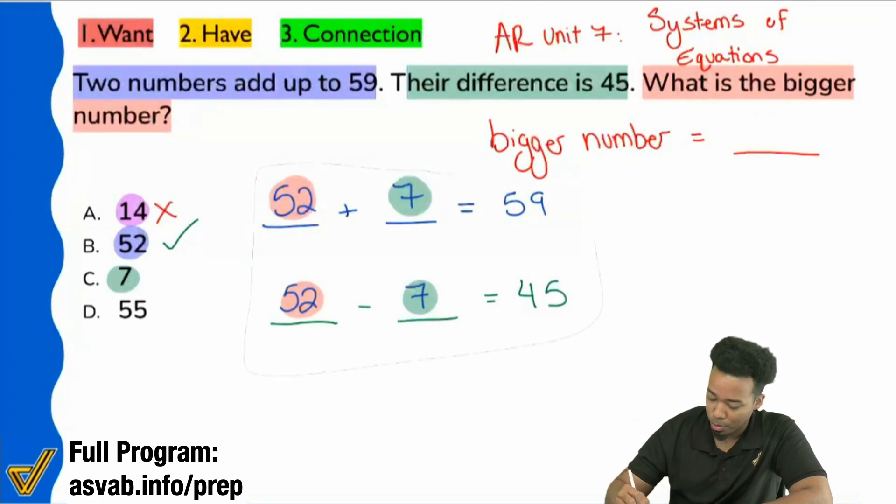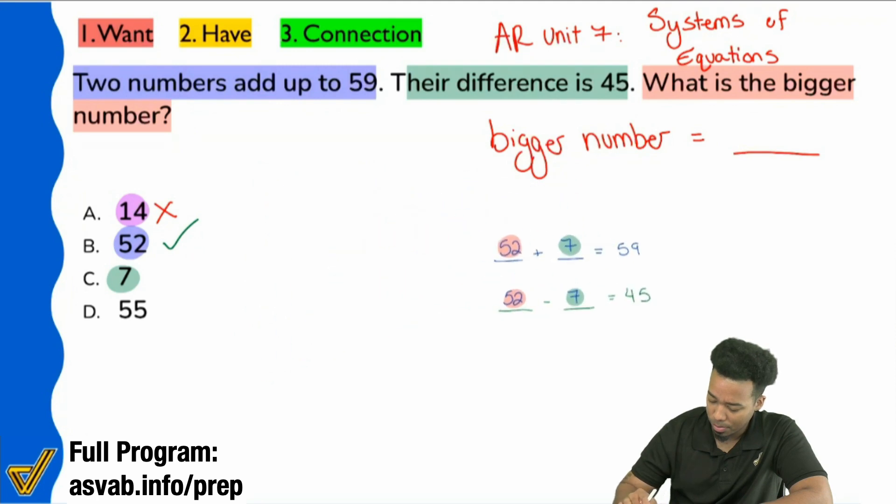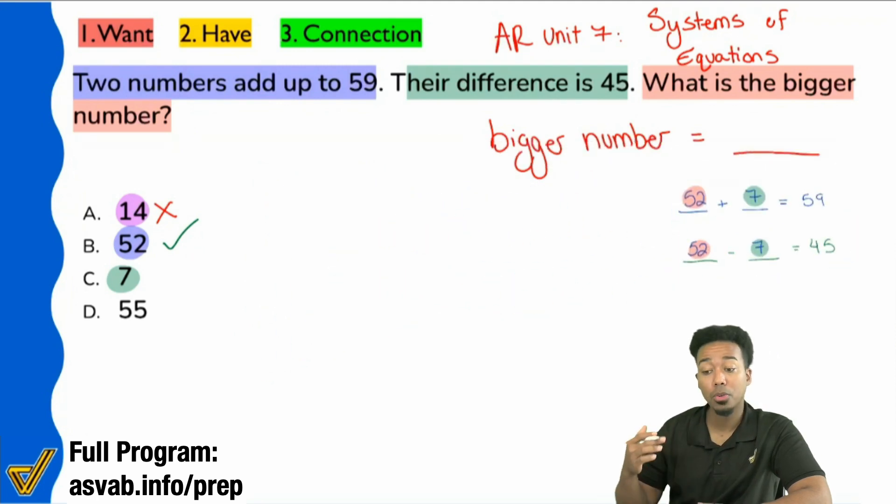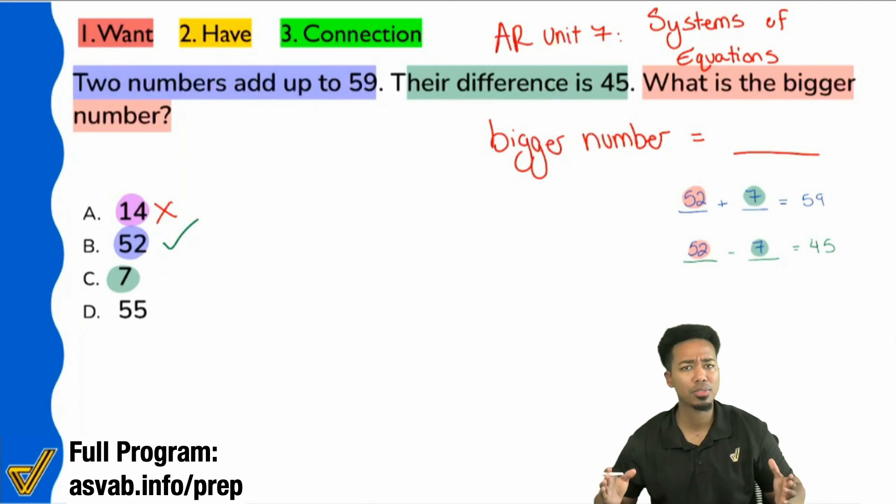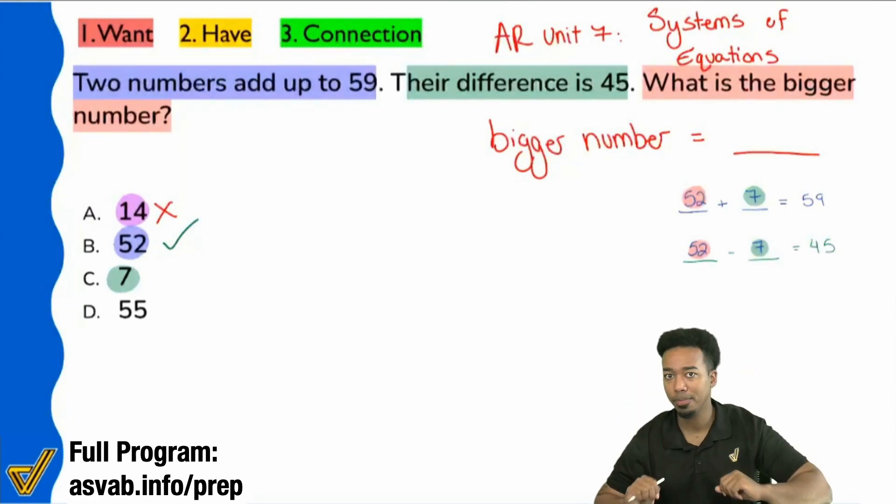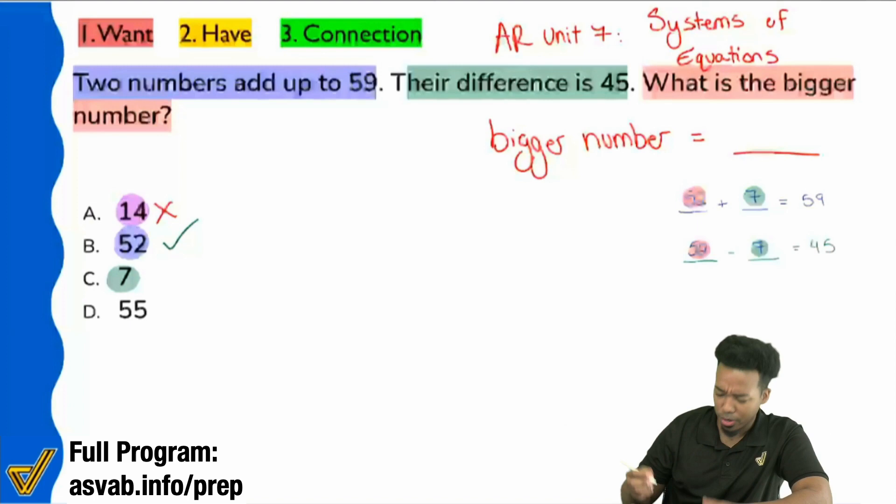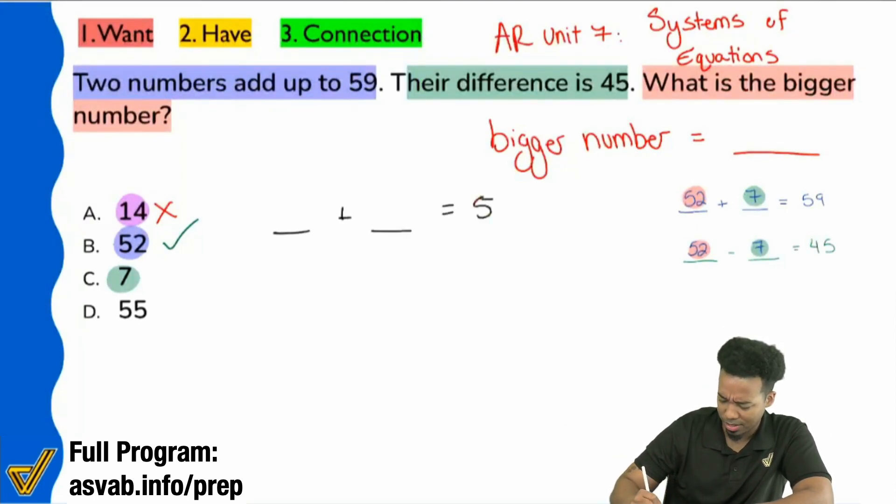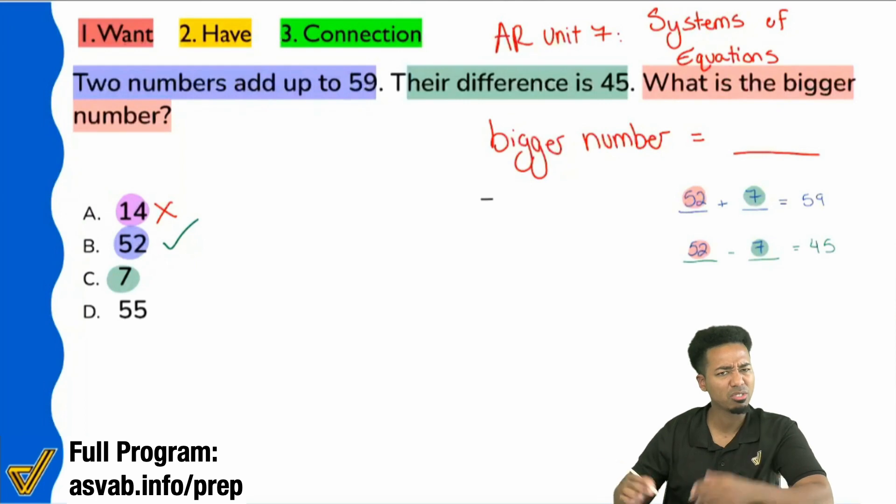So one way, again, was to use process of elimination. The other way is using algebra. And algebra is just a fancy way of saying representing everything with equations and variables. That's all it is. That's all algebra means. Writing it in math, quote unquote. So earlier, you know how we said, hey, blank plus blank equals 59. We kind of use the blank there, right? So instead of using a blank, we'll just use letters.